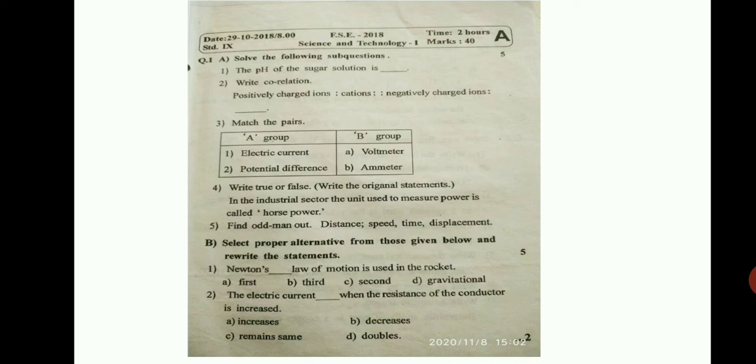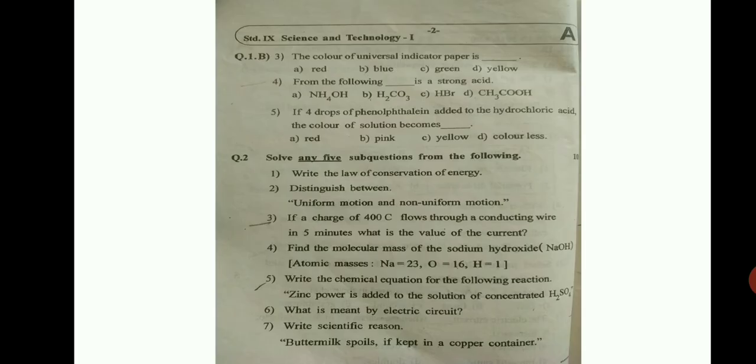You have to just select the answer, write in full statement and then write it down. It is for 5 marks. Newton's dash law of motion is used in rocket. Second question, the electric current dash when the resistance of the conductor is increased. Third question, the color of universal indicator paper is dash.